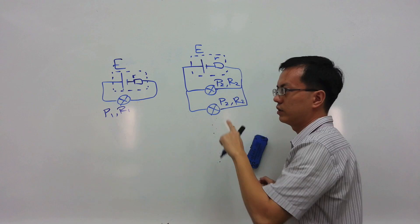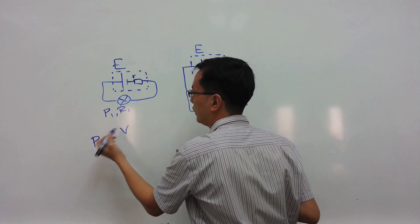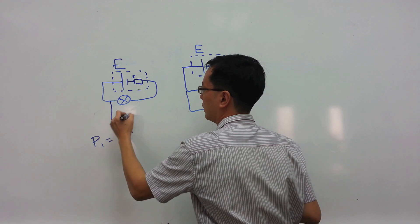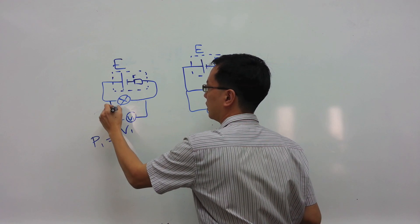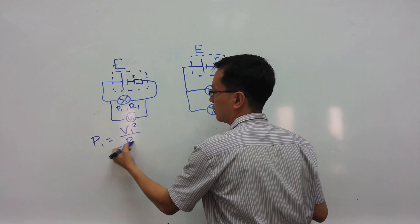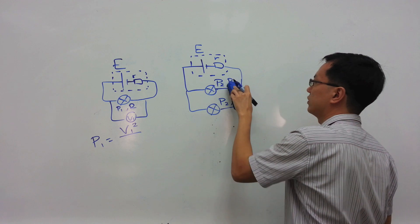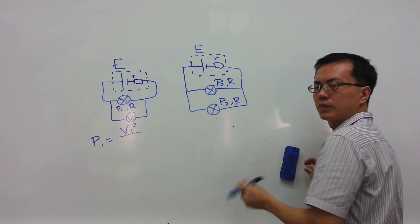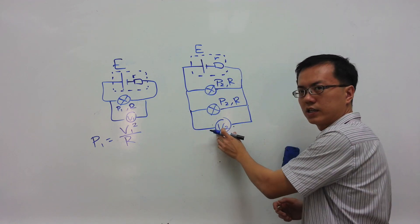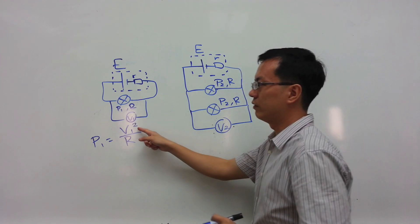The power dissipated within the light bulb in the circuit with a single light bulb is going to be given by P equals P1. We can measure the potential difference across it as V1. So the power P1 equals V1 squared over R1. The resistance in all three bulbs is assumed to be the same, so we can represent this using R. The power dissipated within this single light bulb is given by V1 squared over R.